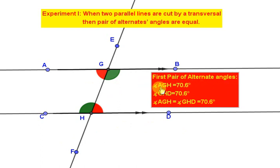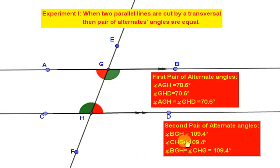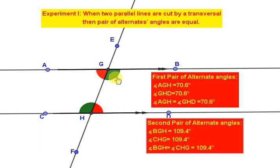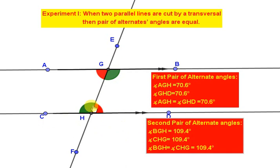The first pair of alternate angles is angle AGH, shown in red, and another angle GHD, also shown in red. These two red angles are a pair of alternate angles. The second pair of alternate angles is angle BGH, shown in green, and angle CHG, also shown in green. These two angles are another pair of alternate angles.